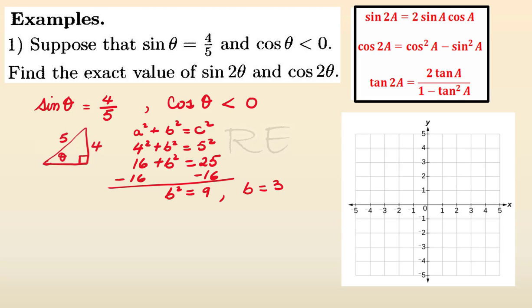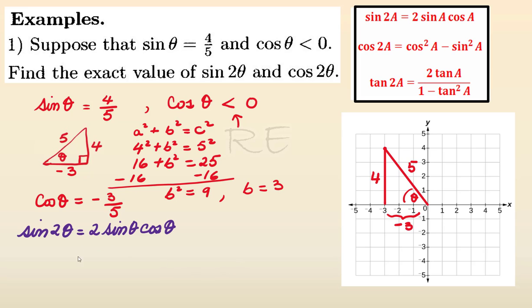Because we are in the second quadrant, B is going to be negative three. Therefore cosine equals negative three over five, with the hypotenuse being five. Looking at our triangle in the coordinate plane, the opposite side is four, the adjacent side is negative three, and the hypotenuse is five.